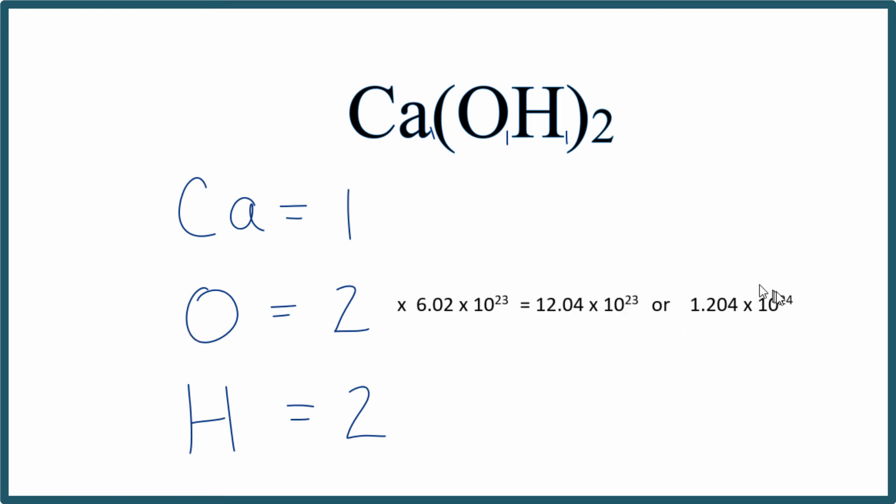You could also reduce this down to a more standard form like this. So that's the number of atoms in calcium hydroxide, each type of atom, and the number of atoms in one mole of calcium hydroxide, Ca(OH)₂.